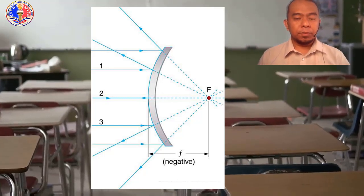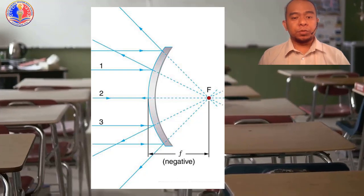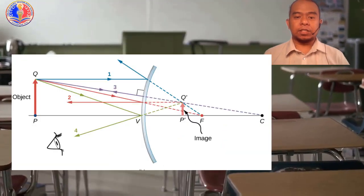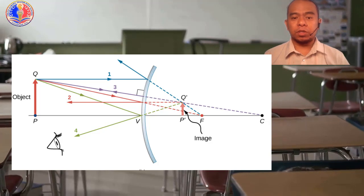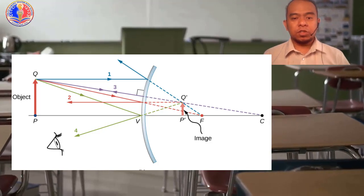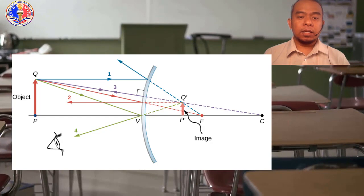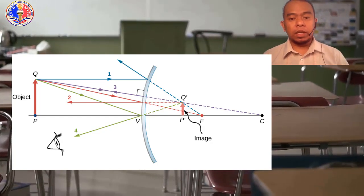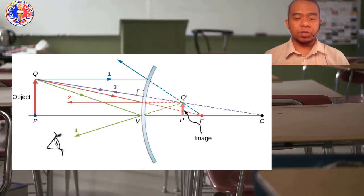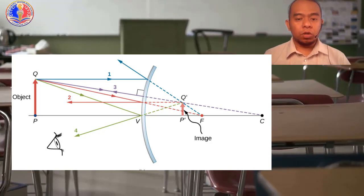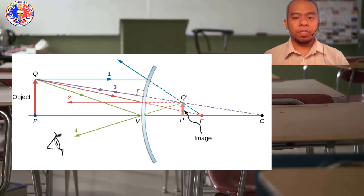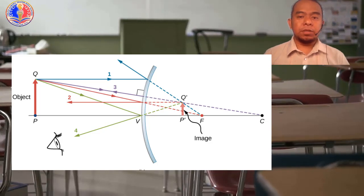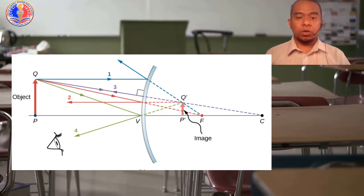Now, what if we place our object anywhere on the principal axis? Where will the image form? The image form will be between the pole and the focus. It is diminished, meaning it is smaller than our object. Of course, it is virtual and erect. Those are the two summaries of the images formed in a convex mirror.